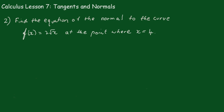Right, and in question 2, we have to find the equation of the normal to the curve f(x) = 2√x at the point where x is equal to 4. Now, at x equals 4, the function will be equal to 2√4, and the square root of 4 is 2, and 2 times 2 is 4.